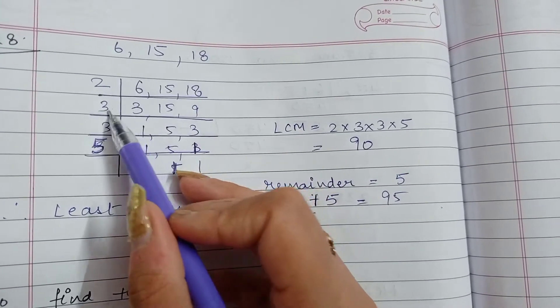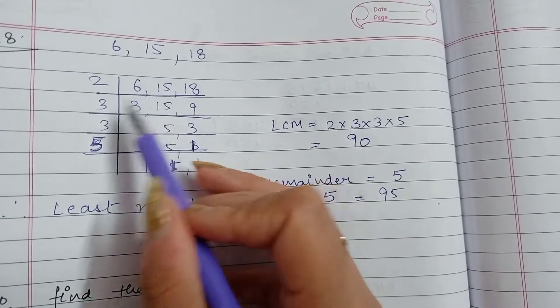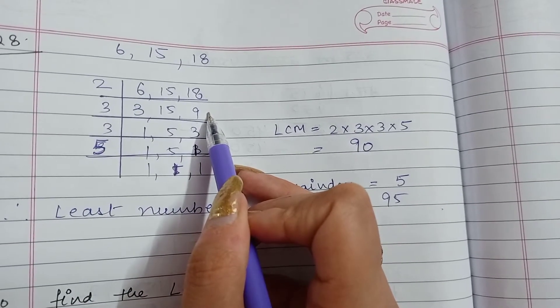3 will get divisible now. 3, 1's are 3, 3, 5's are 15, 3, 3's are 9. It is dividing all 3 numbers.